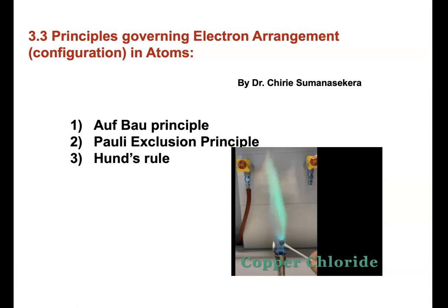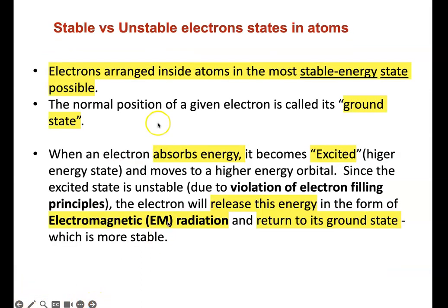It is not possible to accommodate more than a certain number of electrons, so these three principles will explain why that is. In atoms, electrons are arranged in the most stable energy state possible. When they are in their normal positions in energy levels, sub-levels, and orbitals, they are said to be in their ground state — that is their home base.